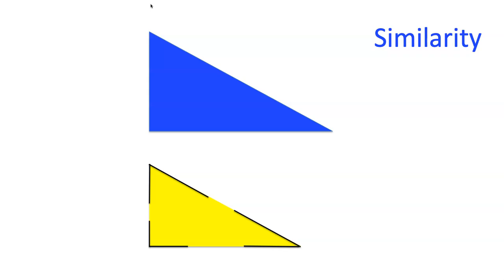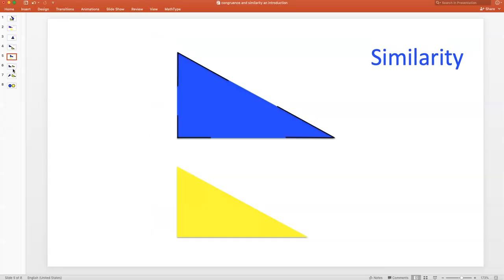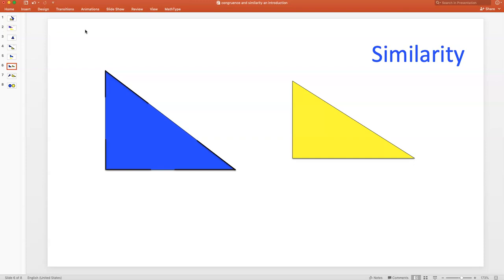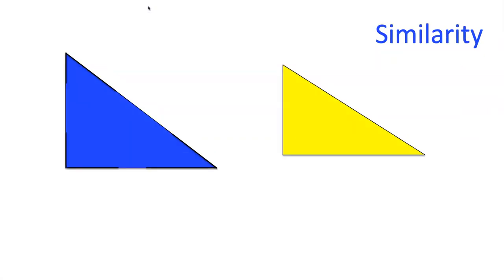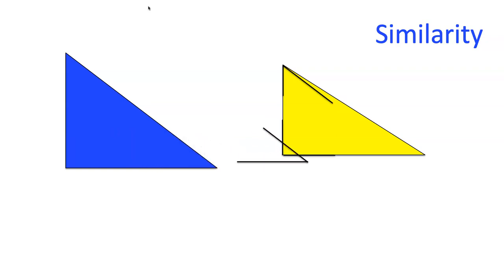There are other shortcuts for similarity that you'll learn in the future as well. Let's look at these two triangles — do they appear to be similar? They're obviously not congruent because the yellow triangle is smaller than the blue triangle. But let's check for similarity. The first corresponding angle: not the same measure. The second one: same measure. The third one: not the same measure. So these two triangles are not similar because all three corresponding angles don't have the same measure.